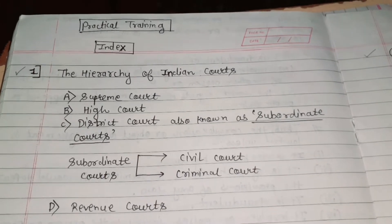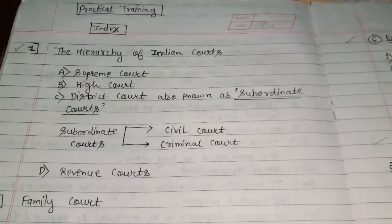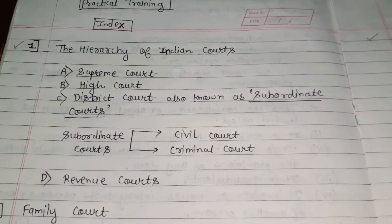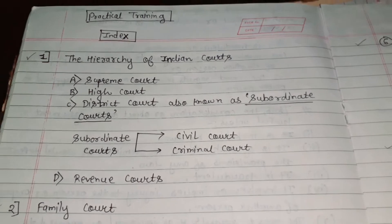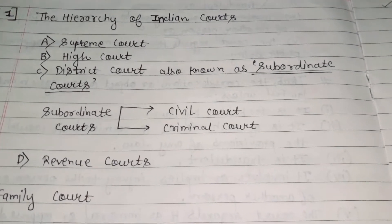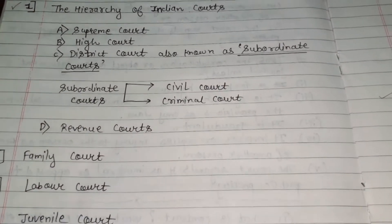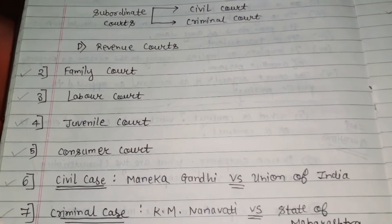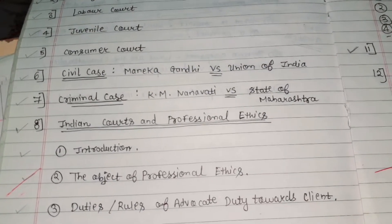This is the fifth subject of the fifth semester. In this subject, the topics were: first, the hierarchy of Indian courts — Supreme Court, then High Court, and District Court, also known as the subordinate courts. Subordinate courts include civil courts, criminal courts, revenue courts, family courts, labor courts, juvenile courts, and consumer courts.